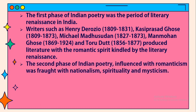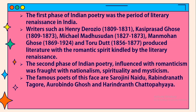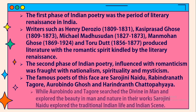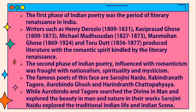The second phase of Indian poetry, while still influenced by Romanticism, was fraught with nationalism, spirituality, and mysticism. The famous poets of this phase include Sarojini Naidu, Rabindranath Tagore, Aurobindo Ghosh, and Harindranath Chattopadhyaya. While Aurobindo and Tagore searched for the divine in man and explored beauty in man and nature, Sarojini Naidu explored traditional Indian life and the Indian scene.